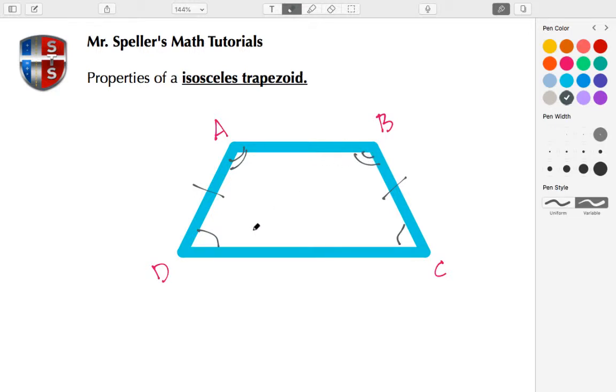We also know that the sum of angle A and angle D is 180 degrees, so they're supplementary. So angle A plus angle D equals 180 degrees. We also know that angle B, which is this angle here, plus angle D is also 180 degrees.